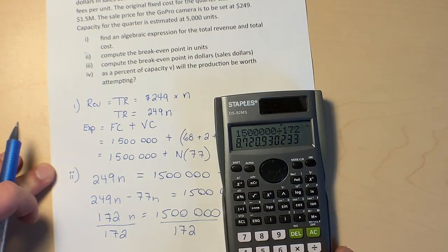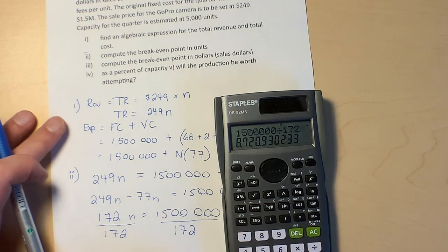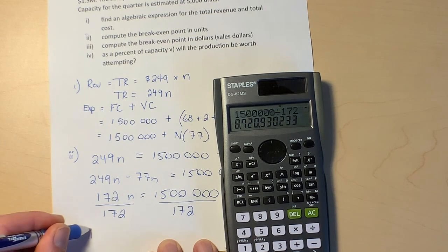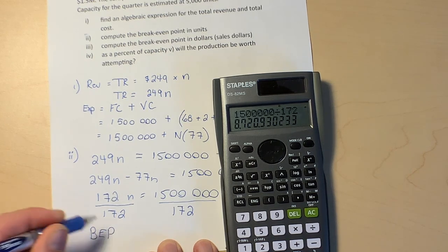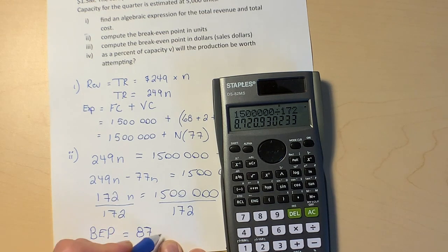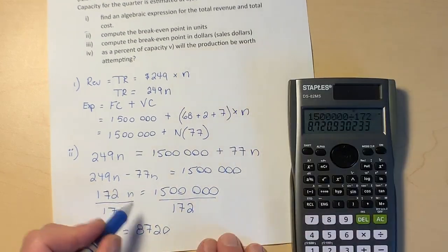So this is saying that our break-even point—I'll just call it BEP, break-even point—is 8,720.93 units.